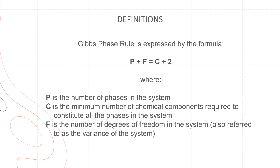Gibbs phase rule is expressed by the formula p plus f equals c plus 2, where p is the number of phases in the system, c is the minimum number of chemical components required to constitute the phases in the system, and f is the degrees of freedom in the system, also referred to as the variance of the system.